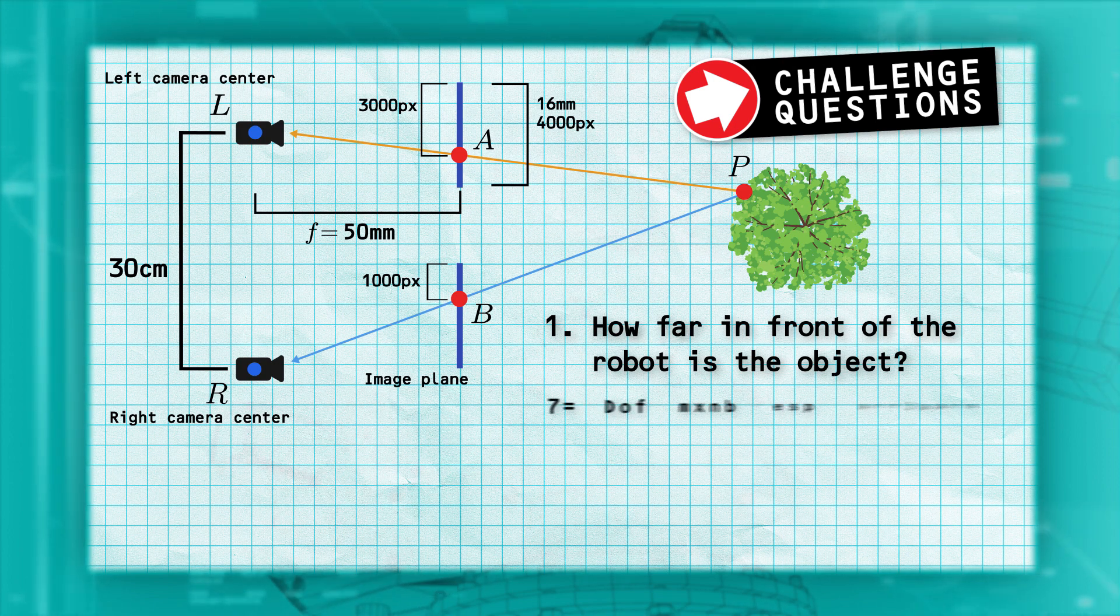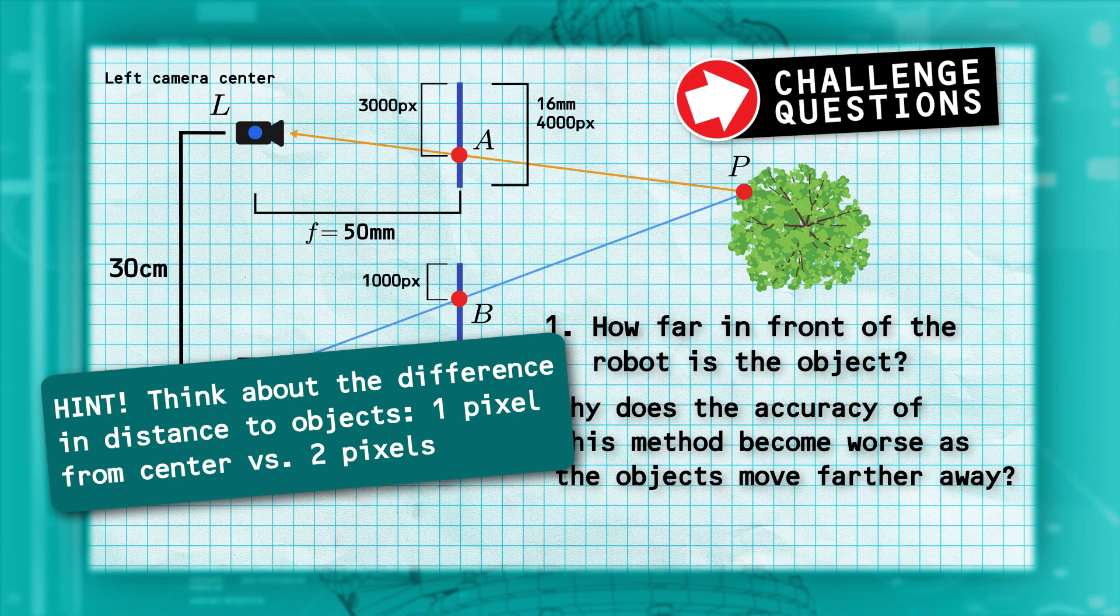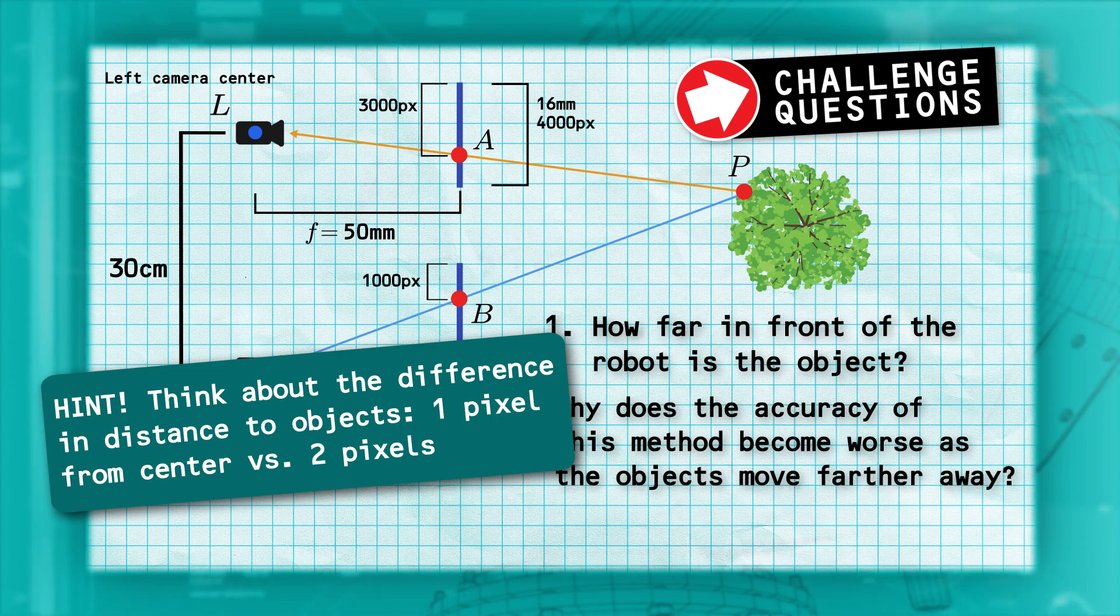Question two is, why does the accuracy of this method become worse as the objects move farther away? It may help to think about what the distance is if the objects are one pixel from the center versus two pixels from the center.